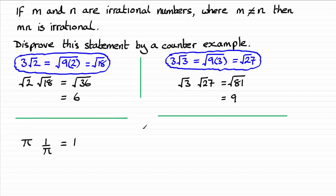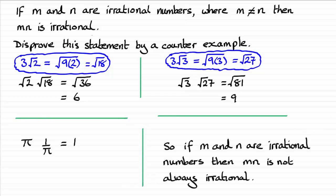So here we go then, we've got three examples, and if you were to write a conclusion, you can see that if m and n are irrational numbers, then m times n is not always irrational.